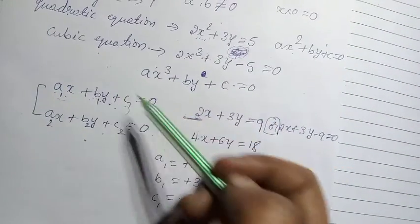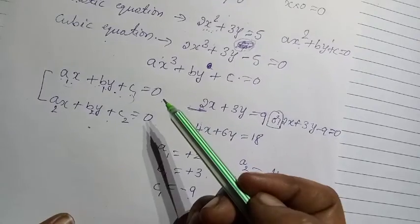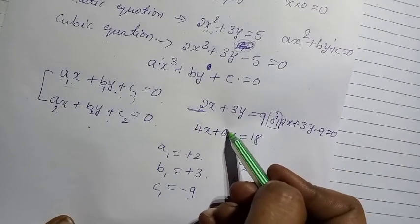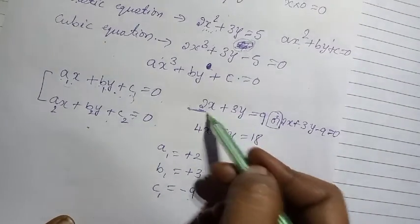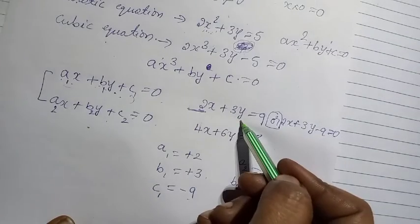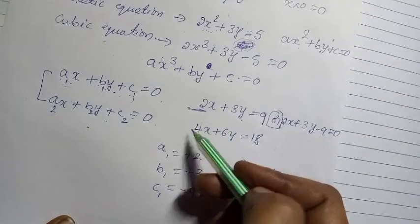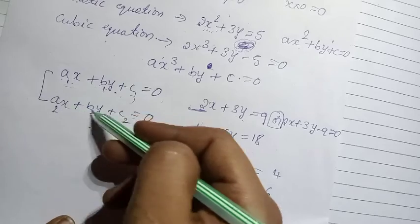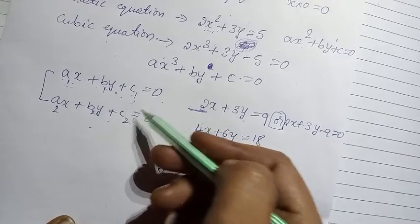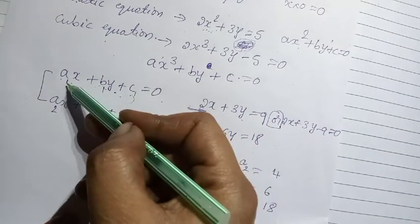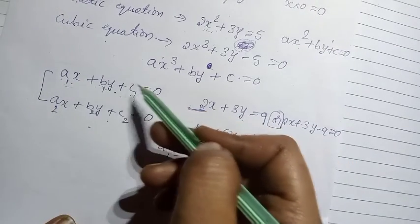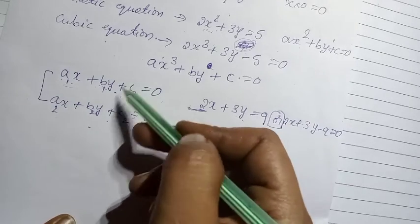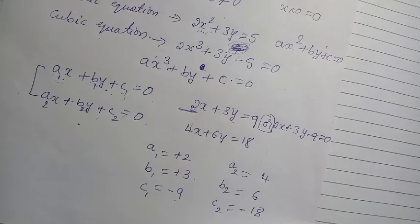What you learn is: pair of linear equations means two linear equations with the variables x and y. Here, a1, b1, c1 and a2, b2, c2 are the real numbers. A1 and b1 should not be 0. If the constant term is 0, nothing will happen. But you have to know that.